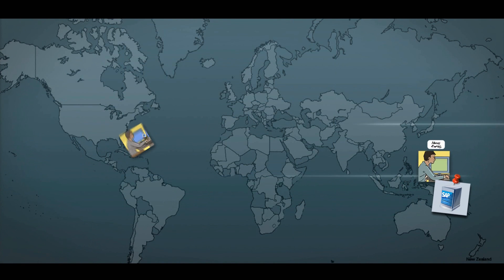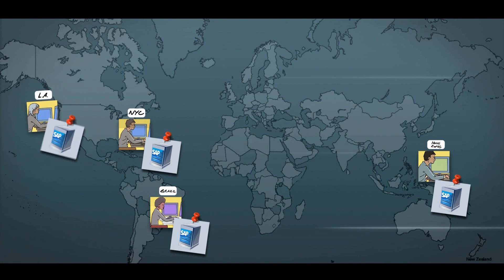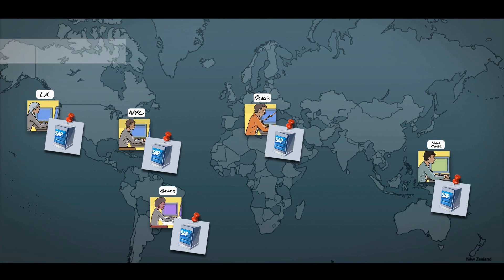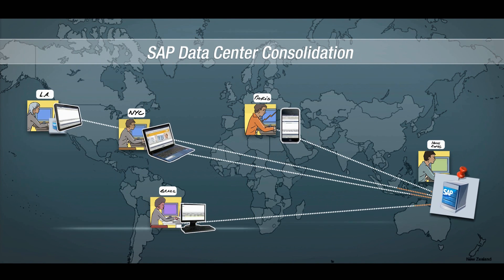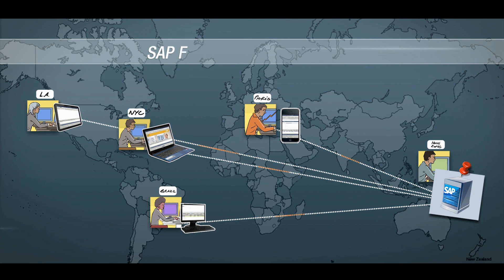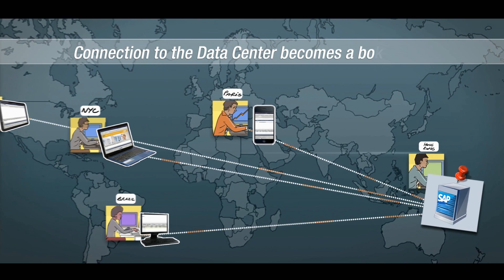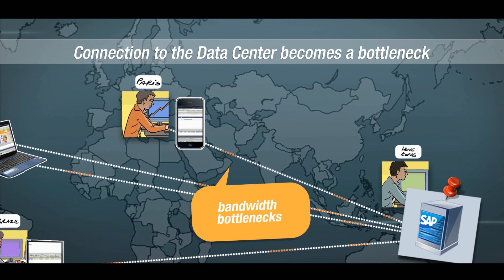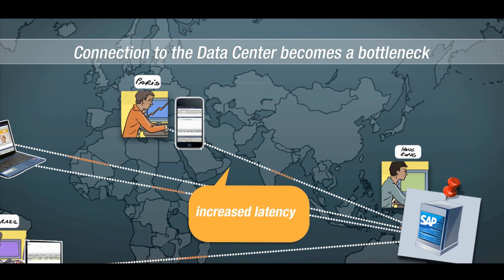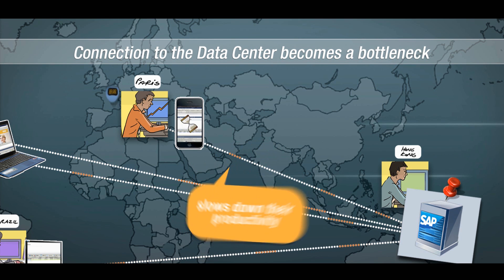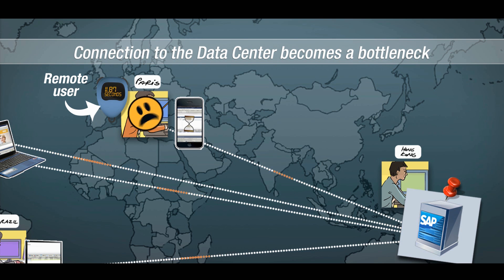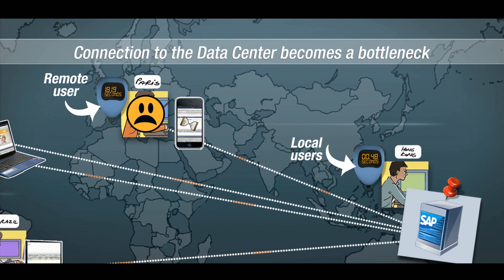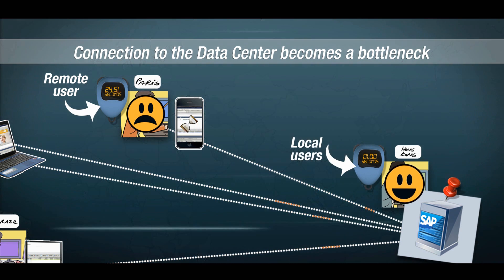In a world of global economies, the number of organizations with operations in multiple locations is growing fast. The data center consolidation trend increases the volume and diversity of remote users accessing SAP applications. But remote SAP users suffer from bandwidth bottlenecks and increased latency, which slows down their productivity. Generating a purchase order, for example, may take more than 60 seconds — an operation that typically takes less than a second for local users.